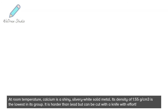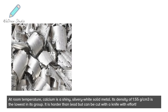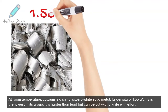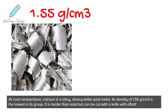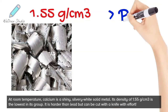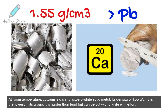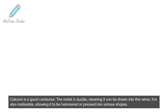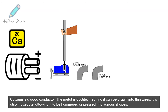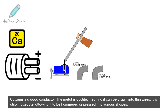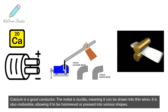At room temperature, calcium is a shiny, silvery-white solid metal. Its density of 1.55 grams per cubic centimeter is the lowest in its group. It is harder than lead but can be cut with a knife with effort. Calcium is a good conductor. The metal is ductile, meaning it can be drawn into thin wires. It is also malleable, allowing it to be hammered or pressed into various shapes.